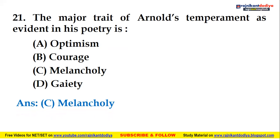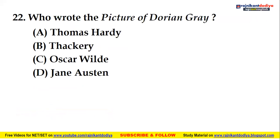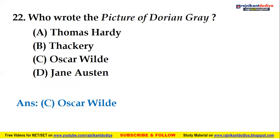Next question: who wrote The Picture of Dorian Gray? Options are Thomas Hardy, Thackeray, Oscar Wilde, or Jane Austen. This is a simple question — the right answer is Oscar Wilde, who wrote The Picture of Dorian Gray.